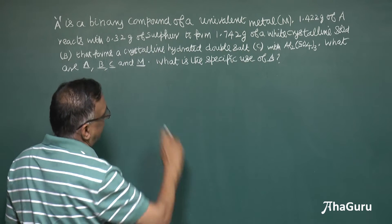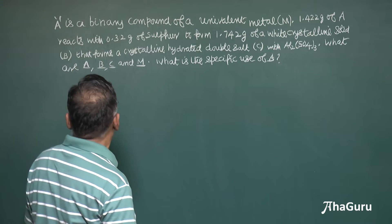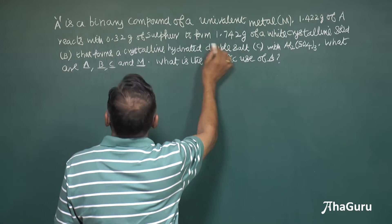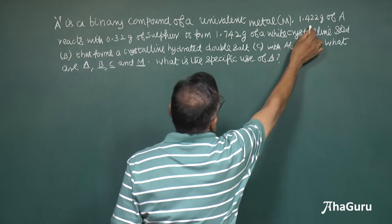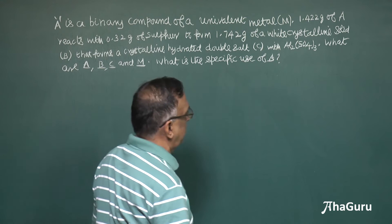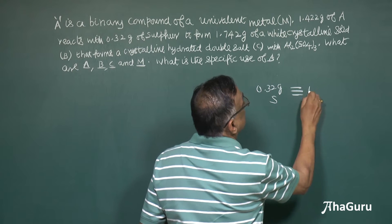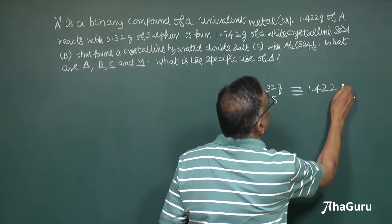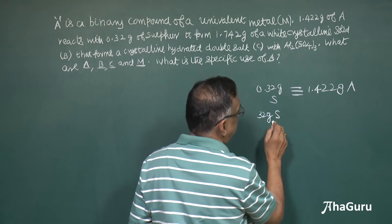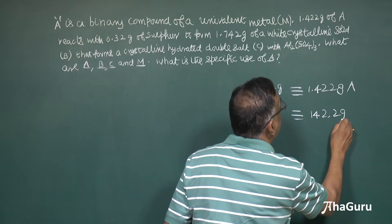The binary compound A of a univalent metal reacts with sulfur to form a white crystalline solid. 0.32 grams of sulfur combines with 1.422 grams of A to form 1.742 grams of the white crystalline solid. So 0.32 grams of sulfur corresponds to 1.422 grams of A. Therefore, 32 grams of sulfur — the atomic weight — will correspond to 142.2 grams of A.